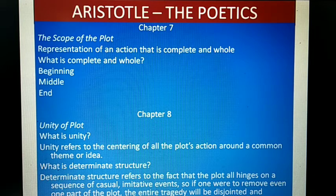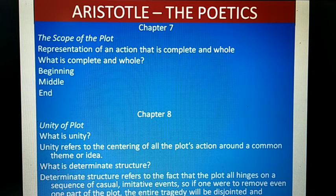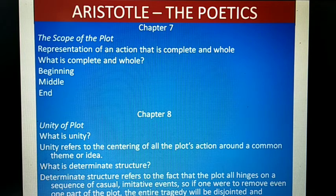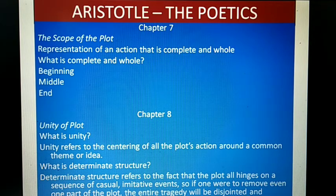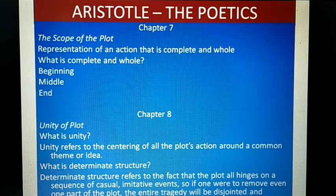Next, we have determinate structure. Determinate structure refers to the fact that the plot all hinges on a sequence of causal, imitative events. If one were to remove even one part of the plot, the entire tragedy will be disjointed and disturbed. More simply, every part of a good plot is necessary. With that, chapter 8 comes to an end.